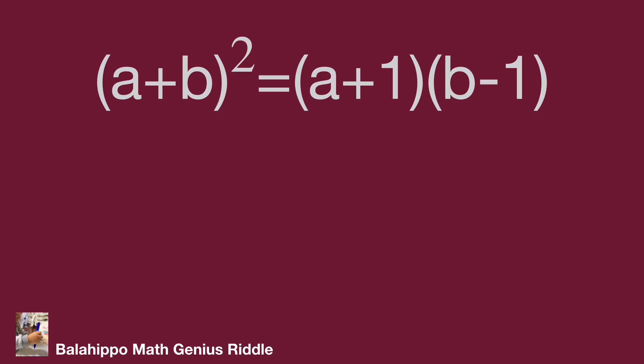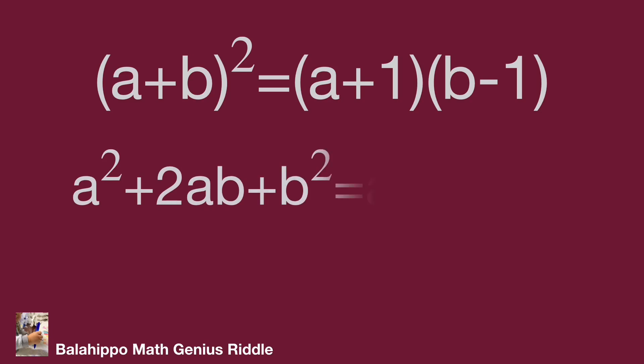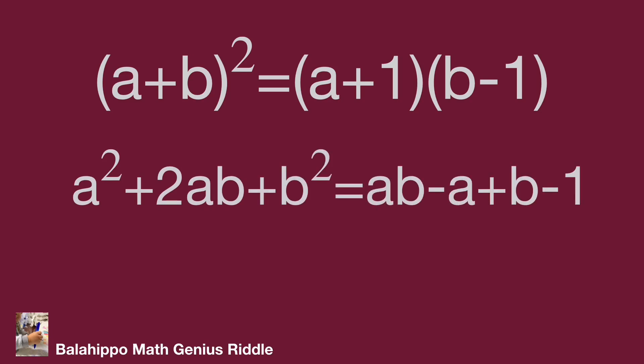The given equation: quantity (a + b) squared equals quantity (a + 1) multiplied by quantity (b + 1). To find the value of a and b, we may develop all the quantities then try to re-factorize to find the answer, such as: a squared plus 2ab plus b squared equals ab plus a plus b plus one. But I don't plan to do that. Let's find another approach.